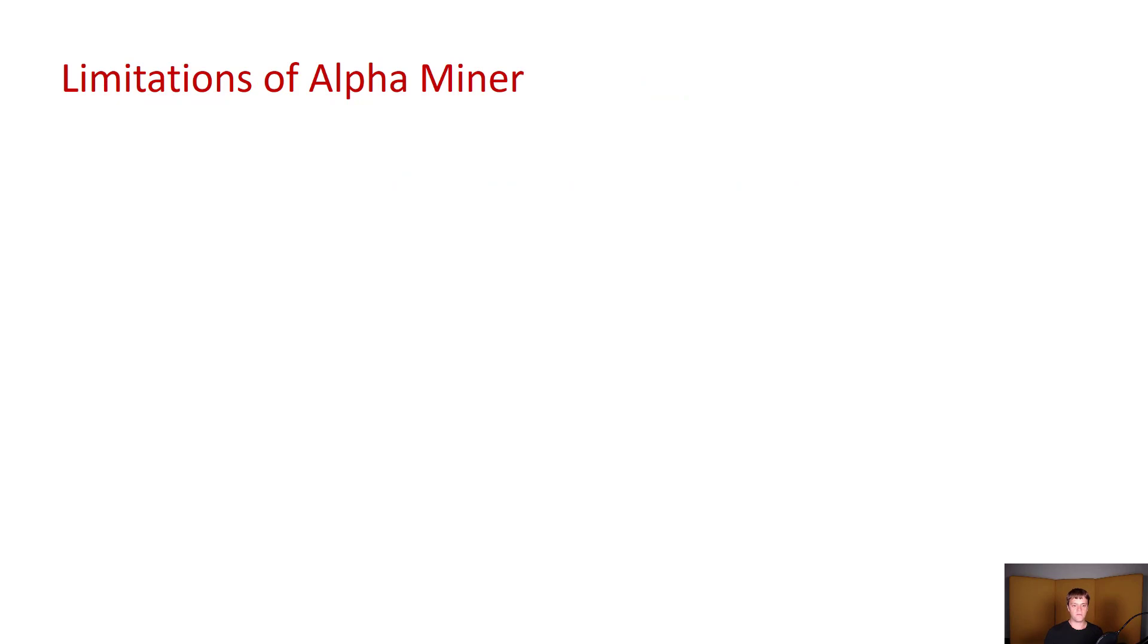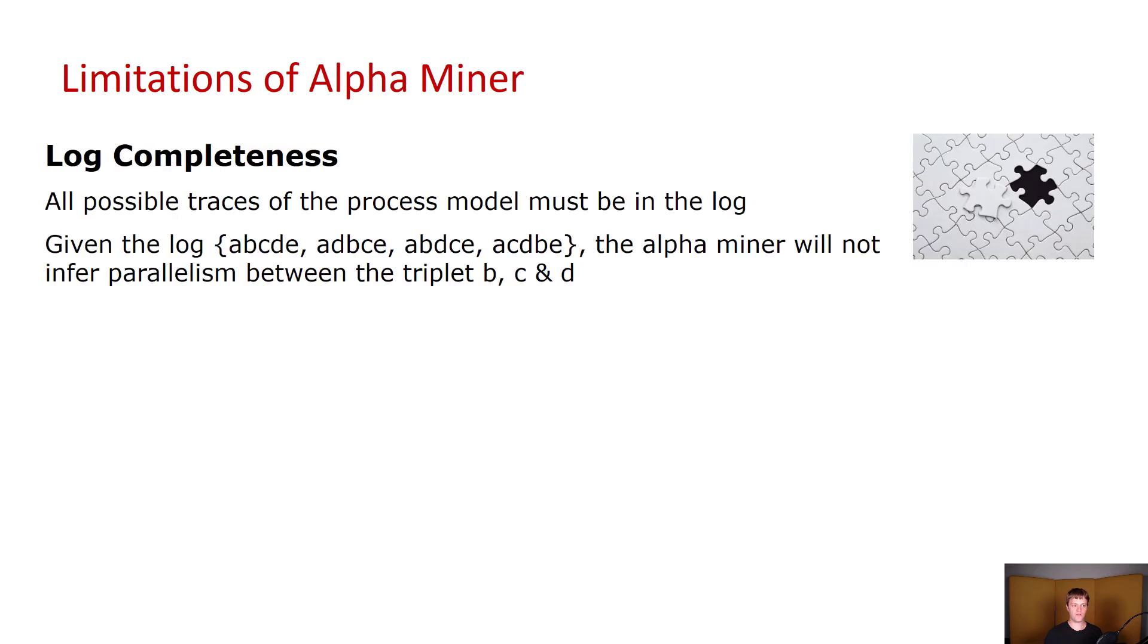Now while the alpha algorithm is relatively easy to understand and easy to implement, it has some severe limitations. One of those limitations is that it kind of assumes that all possible traces of the process model must be in the log. As a result, in some cases it cannot actually figure out the activities occurring in parallel, even though a human user would find it relatively obvious.